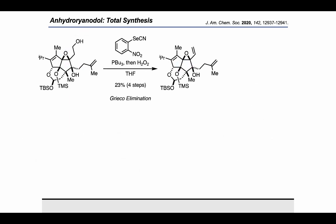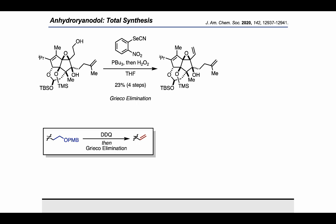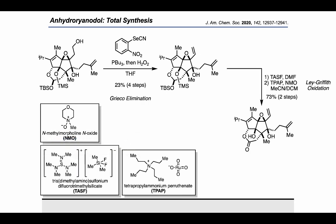This set them up for a Greco elimination to convert the primary alcohol into a terminal alkene. Notably, using this series of steps, they've effectively used an alkyl-OPMB ether as a masked version of a terminal alkene, which is a nice tactic to have in your back pocket. TASF was then used to carry out a global deprotection, after which TPAP and NMO were employed in a Ley-Griffith oxidation to convert the acetal to a lactone.